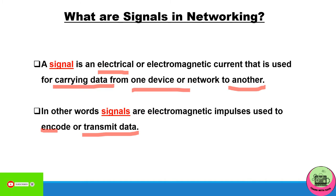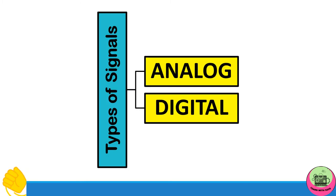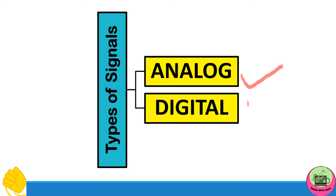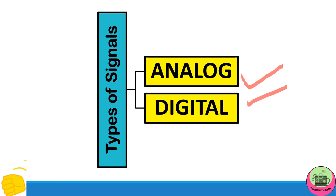There are two types of signals: analog and digital signals. We will see one by one what analog signals are with some examples, and similarly for digital.